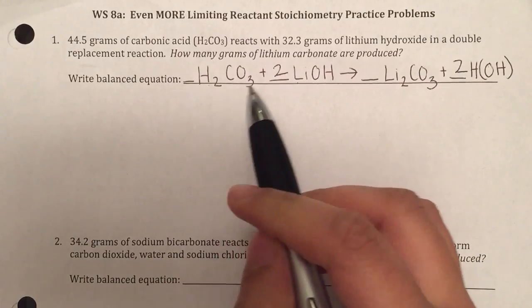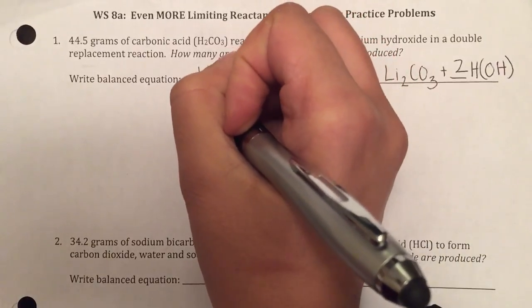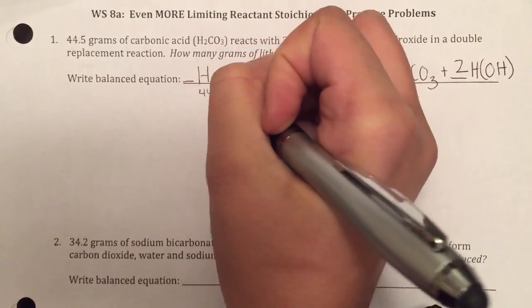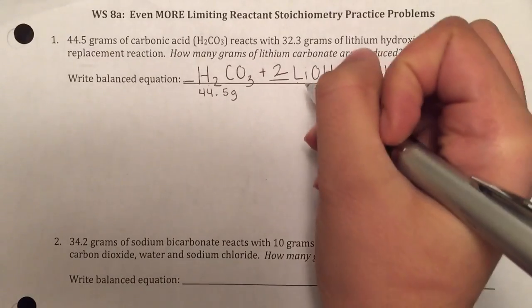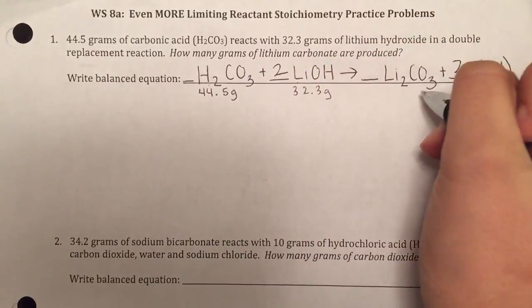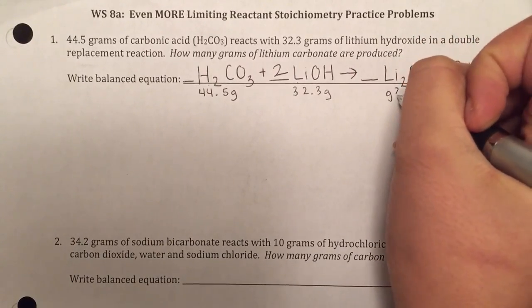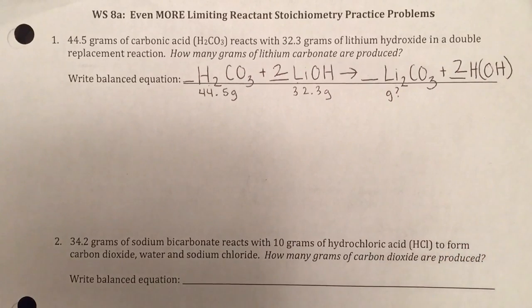Next, I'm going to write how much of each thing I'm given, and then what I'm looking for. They told me I have 44.5 grams of carbonic acid, and I have 32.3 grams of lithium hydroxide, and I'm looking at how many grams of lithium carbonate are produced.